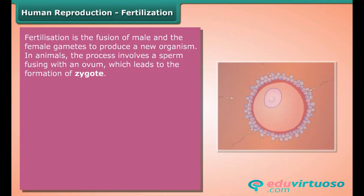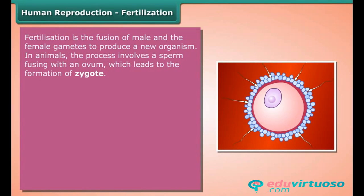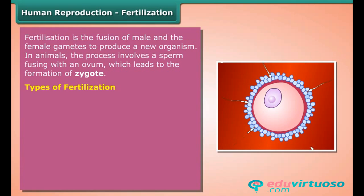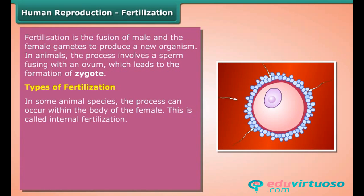Fertilization is the fusion of male and female gametes to produce a new organism. In animals, the process involves a sperm fusing with an ovum, which leads to the formation of a zygote. There are two types of fertilization: in some animal species the process can occur within the body of the female, which is called internal fertilization.